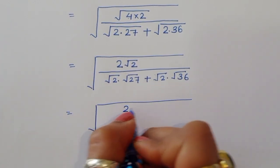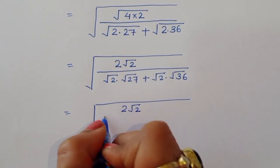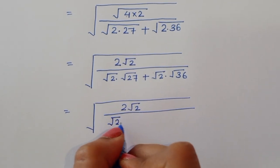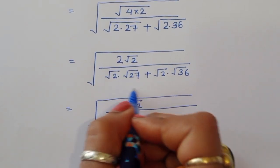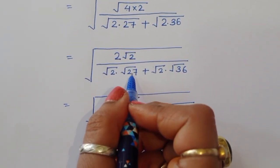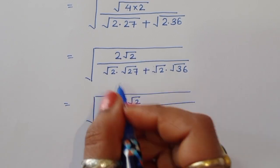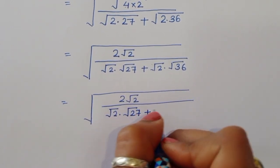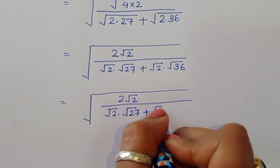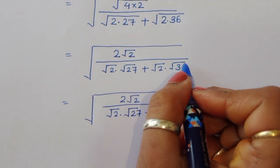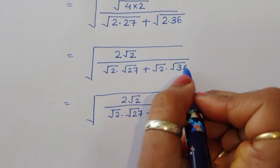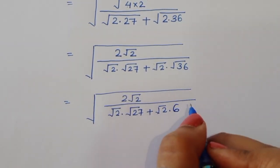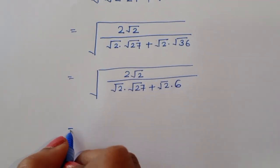We now have 2 times square root of 2 divided by square root of 2 times square root of 27 plus square root of 2 times square root of 36. Since square root of 36 is 6, we write 6 in place of square root of 36.